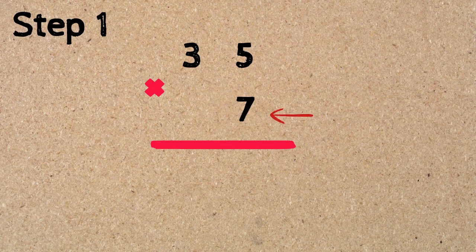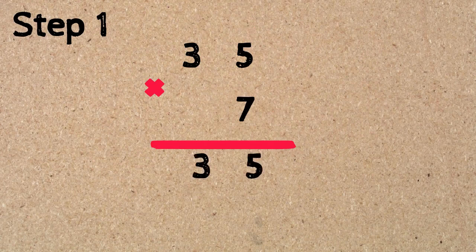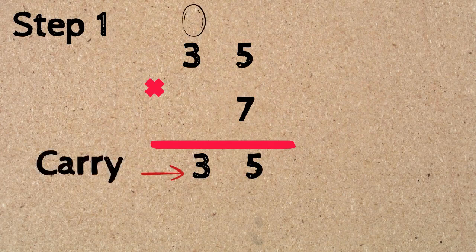For the first step, we start with the bottom digit multiplied by the ones digit of the number on top. So 7 times 5 equals 35. Now, just like what we do with addition, when we get a two-digit answer, we have to carry the first digit on the left to the top of the next column.